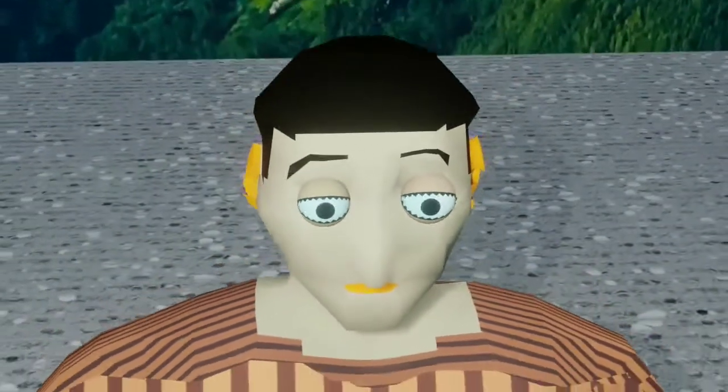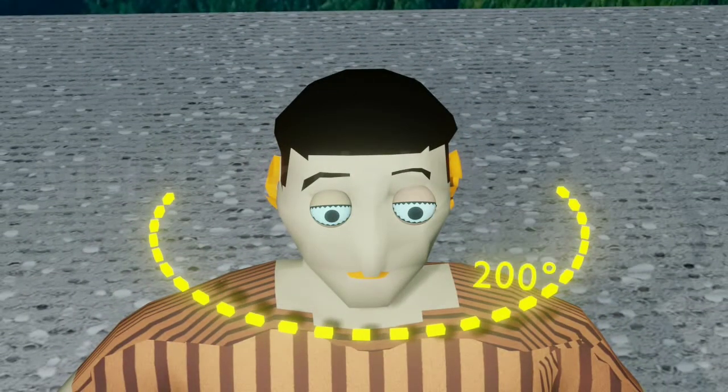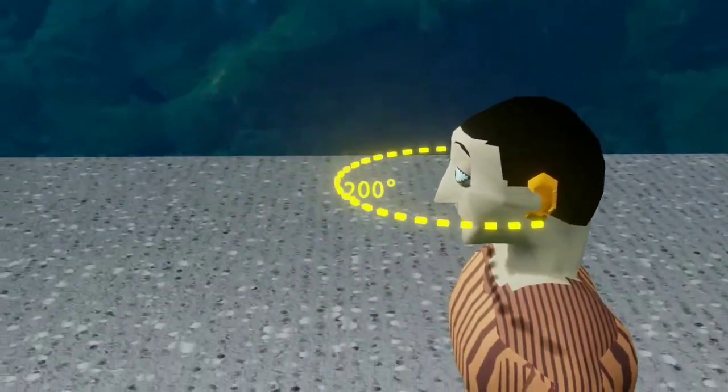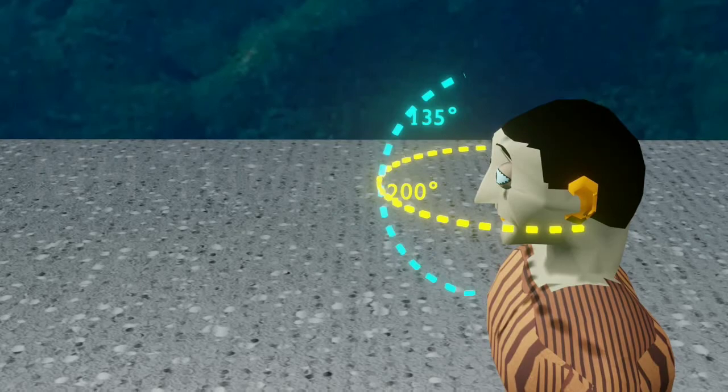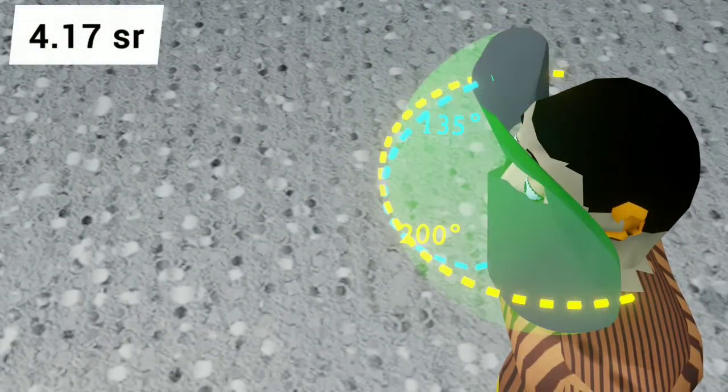Both human eyes collectively can see a view of 200 degrees along the horizontal plane and 135 degrees along the vertical plane. Therefore, total viewing portion is about 4.17 steradians, or 13,700 square degrees.